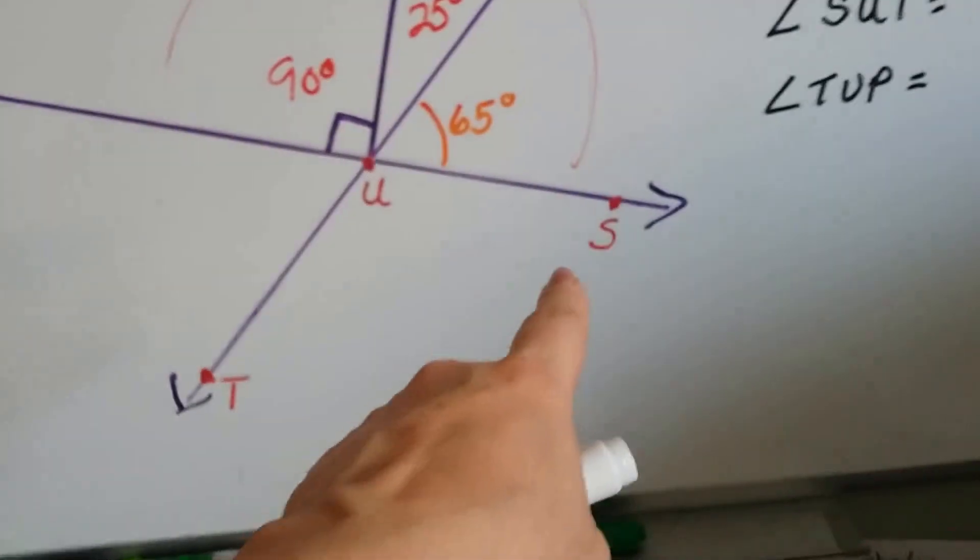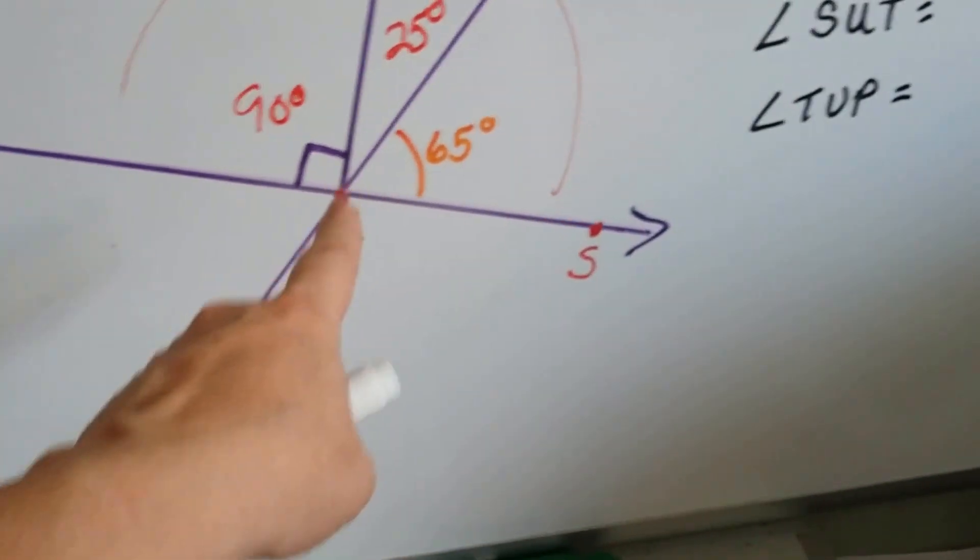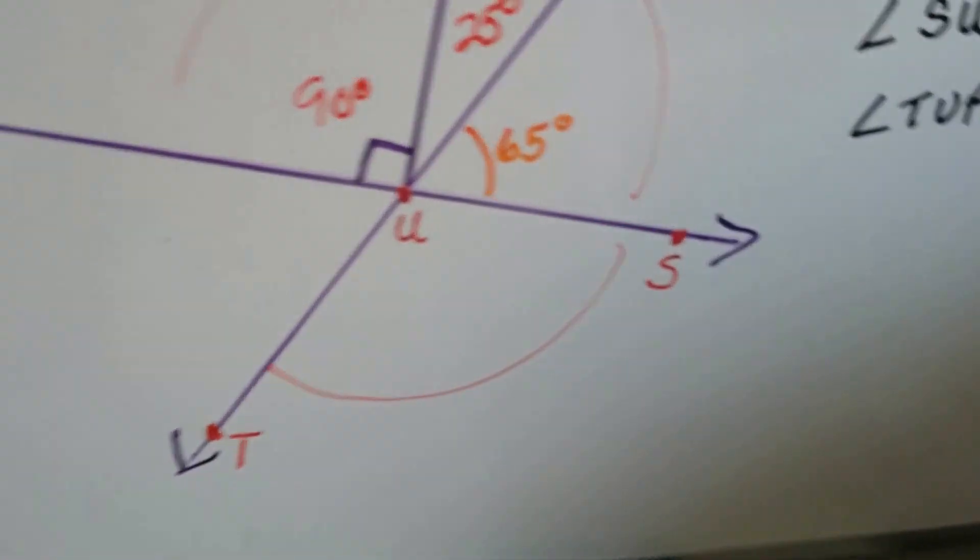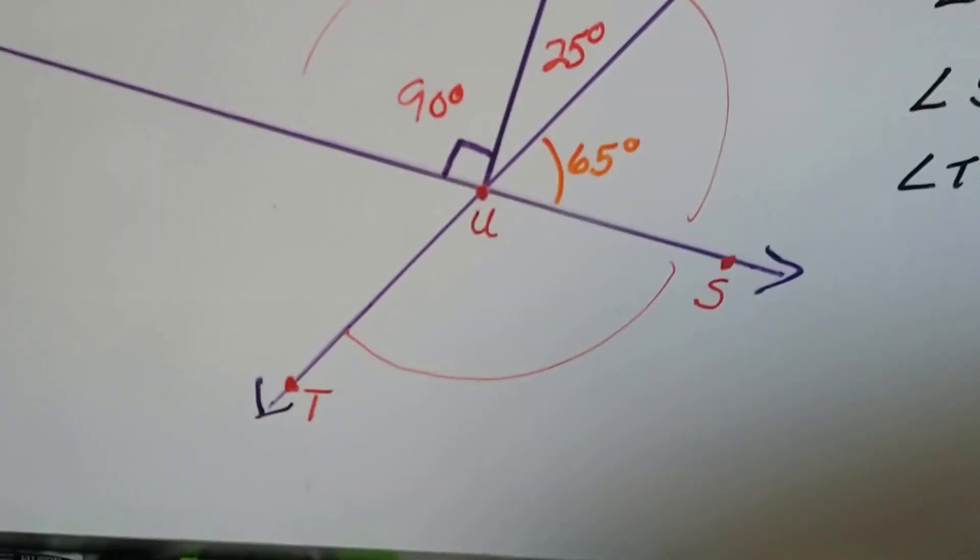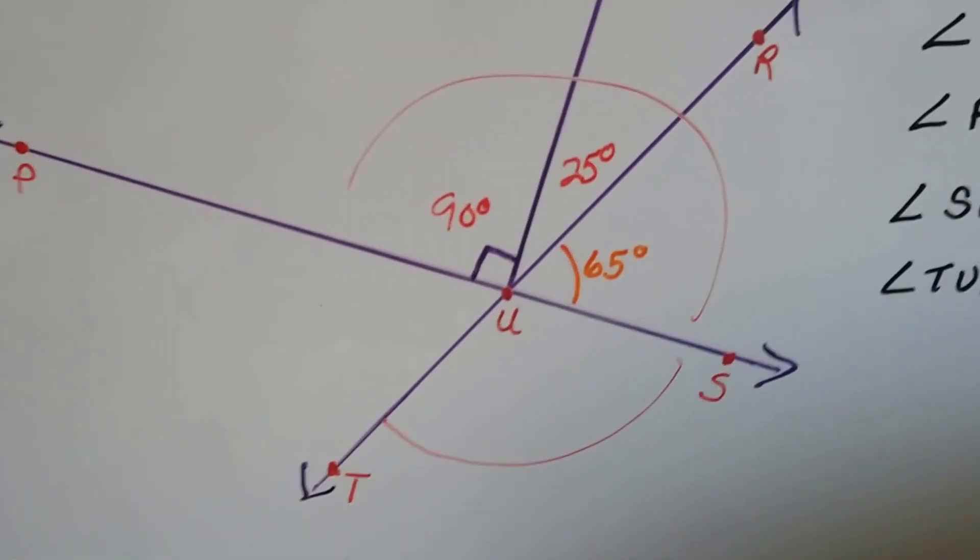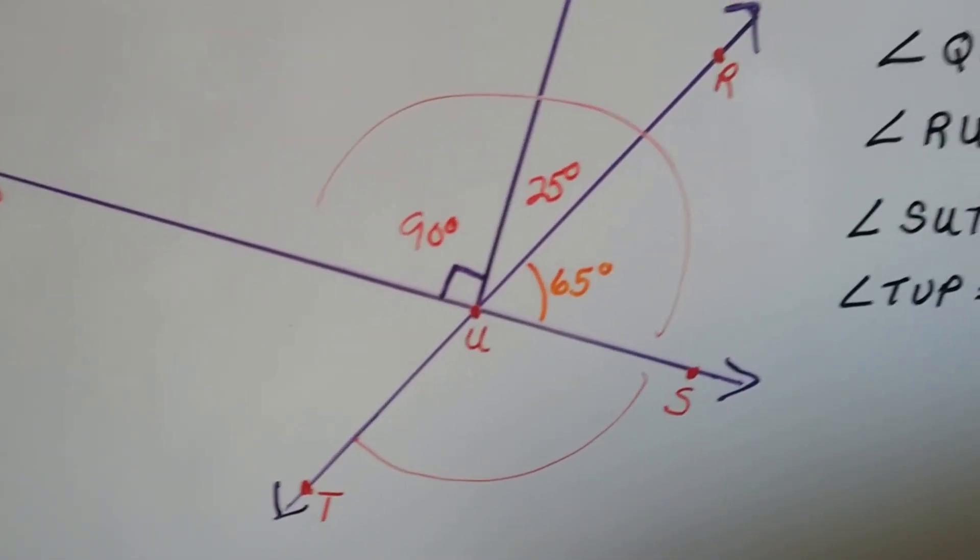65 and 25 is 90 degrees. This 90 and that 90 makes this whole thing here 180 degrees. So we know that Q, U, R is 25 degrees now. Just from doing a little detective work. So what's S, U, T? That's this one here. S, U, T. What is this measure right here? Well, do you see any complementary, supplementary angles, adjacent angles, vertical angles, anything that could help us?